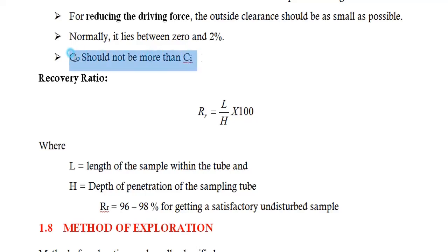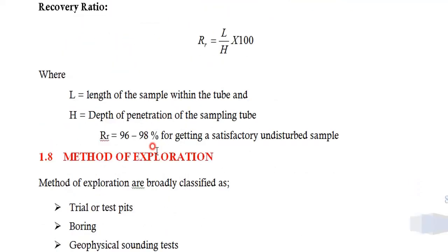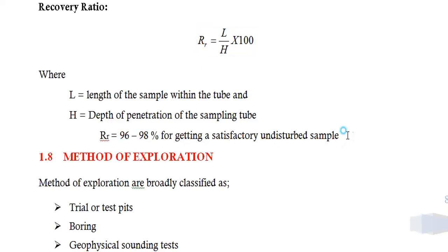To get an undisturbed soil sample, Co should not be more than Ci. Recovery ratio is the ratio of L (length of sample within the tube) to H (depth of penetration of the sampling tube). If the recovery ratio is between 96% and 98%, the sample obtained is called an undisturbed soil sample.